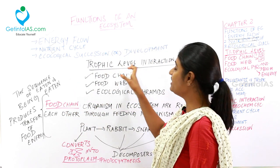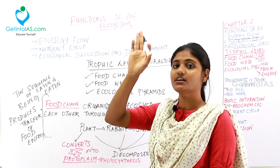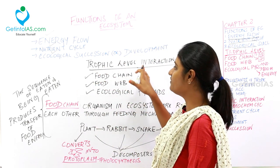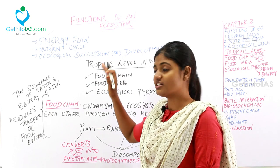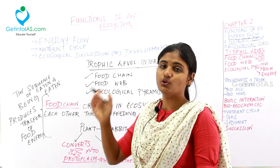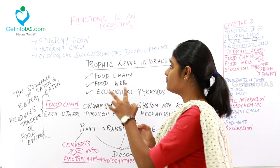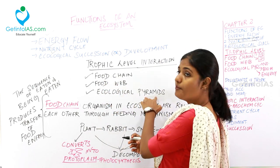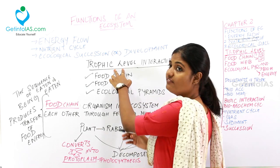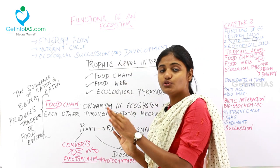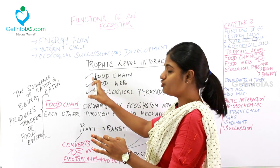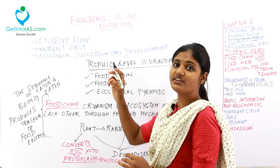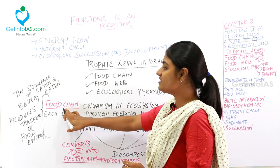There is a trophic level interaction between herbivores and the top carnivore. This trophic level interaction is subdivided into three main headings: food chain, food web, and ecological pyramids. Let's deal with what is a food chain.